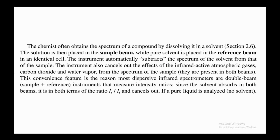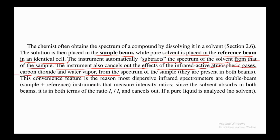A chemist often obtains the spectrum of a compound by dissolving it in a solvent. The solution is placed in the sample beam while pure solvent is placed in the reference beam in an identical cell; the instrument automatically subtracts the spectrum of the solvent from that of the sample. The instrument also cancels out the effects of infrared-active atmospheric gases — carbon dioxide and water vapor — since they are present in both beams. This is the reason most dispersive infrared instruments are double-beam designs.